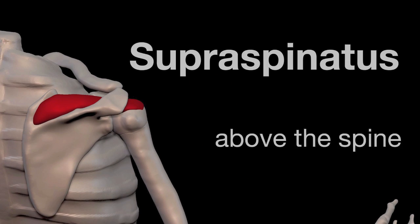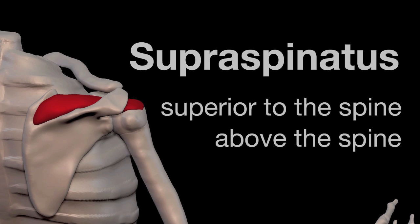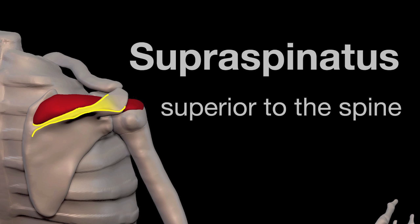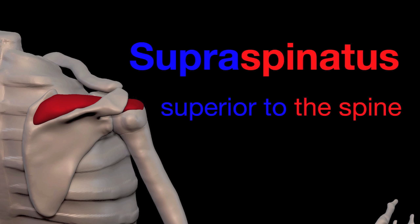Supraspinatus means above the spine. Another way of saying it is superior to the spine. What is meant by spine? Spine is this part of the scapula highlighted right here. So supra means superior and spinatus is referring to the spine of the scapula.